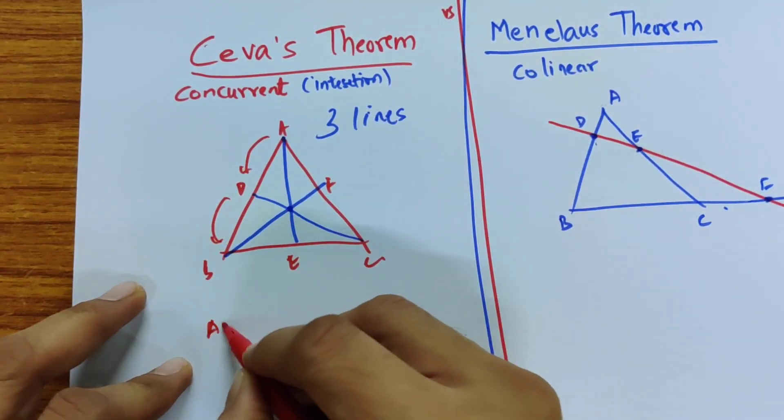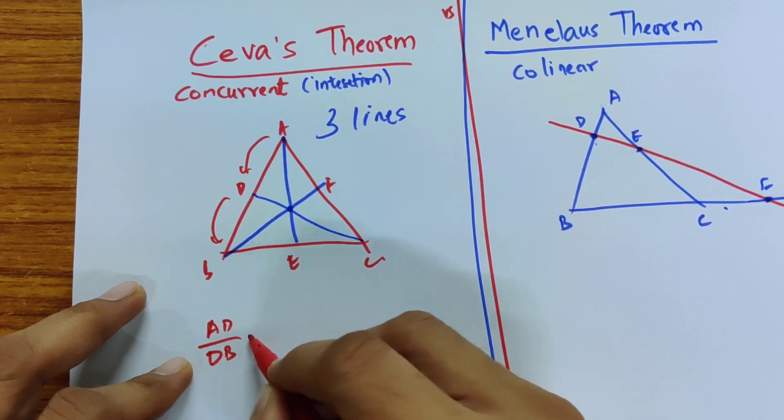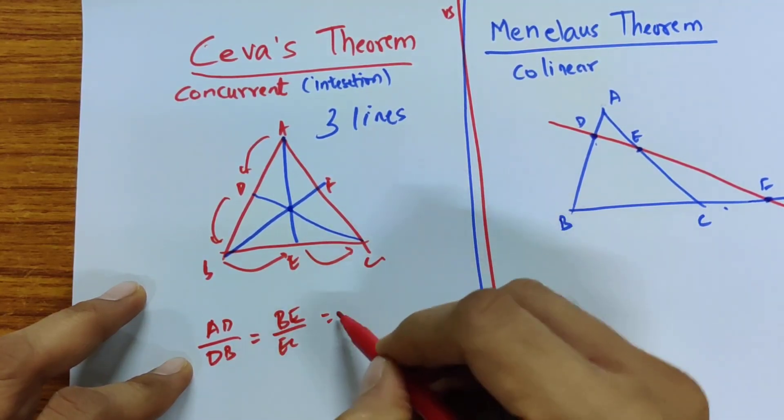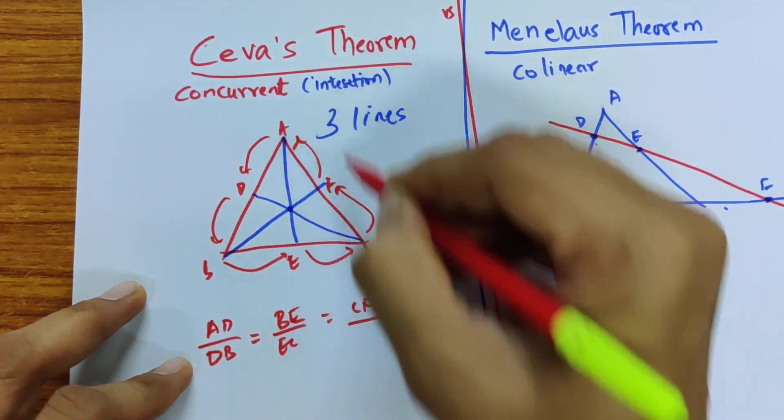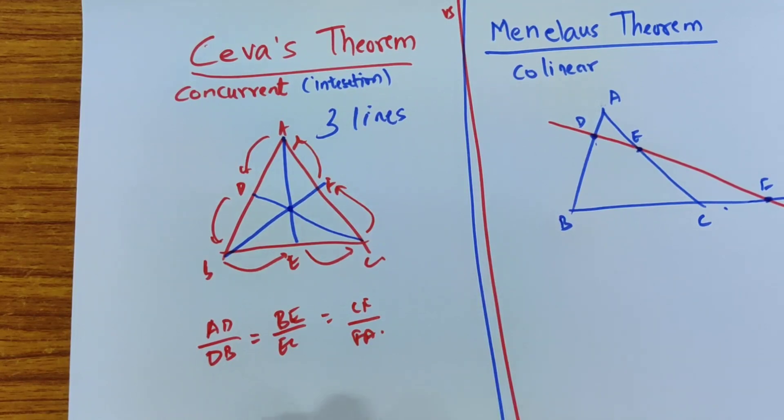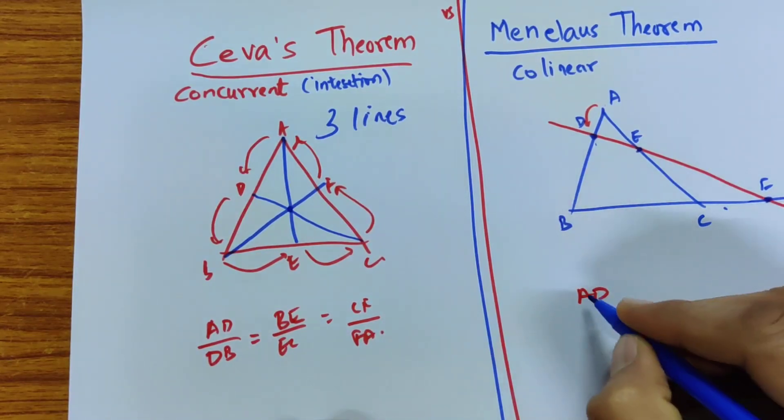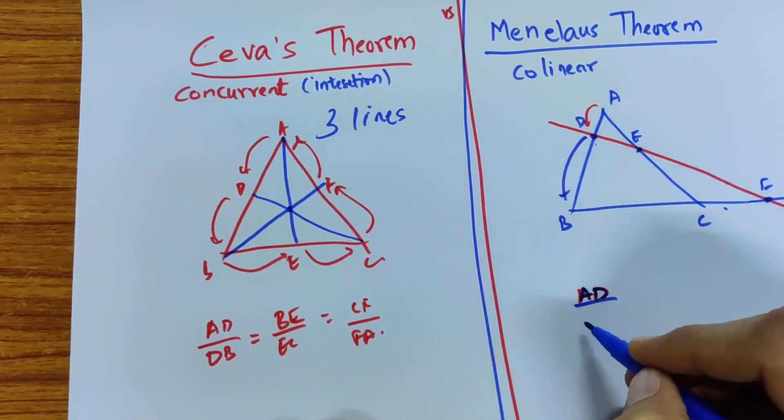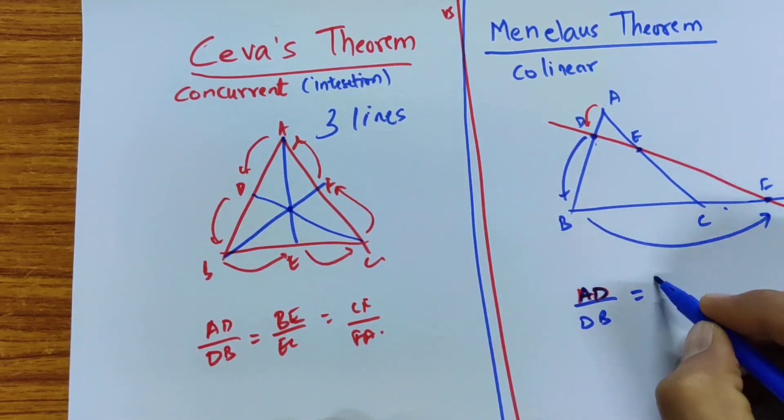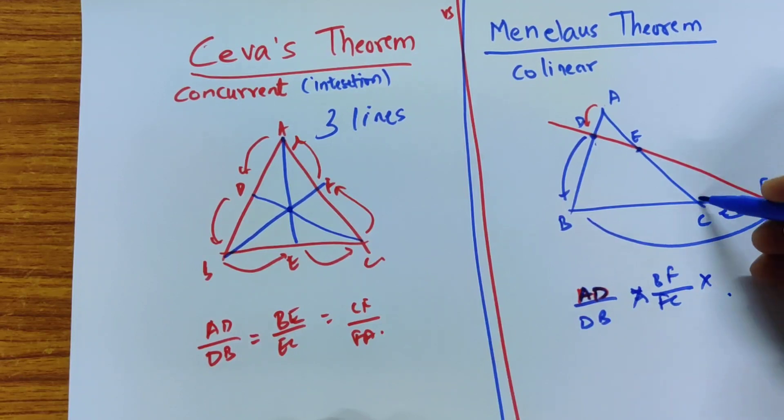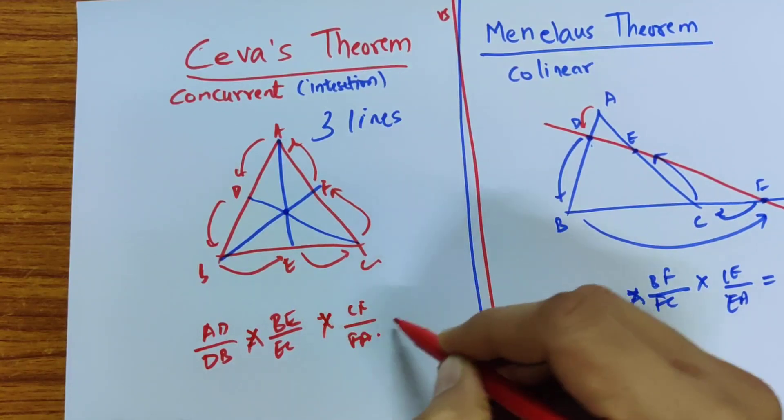But of course, the confusion could be because you would basically do AD divided by DB is equal to BE divided by EC is equal to CF divided by FA. So this part is here. So this part is true and even here it appears the same. So you have AD divided by DB is equal to, and this is the negative term, times BF divided by FC times CE divided by EA is equal to negative 1. So this is actually also a ratio. So it's multiplied together to give 1.